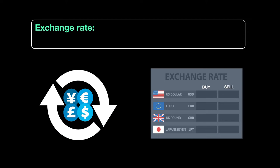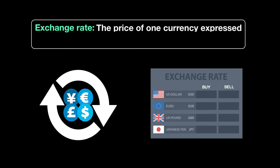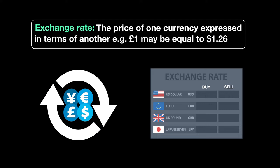How much of one currency do you give up in order to gain X amount of currency of another country? That is what exchange rate is — the price of one currency expressed in terms of another. For example, one pound may be equal to 1.26 dollars, or whatever the prevalent rate is these days.